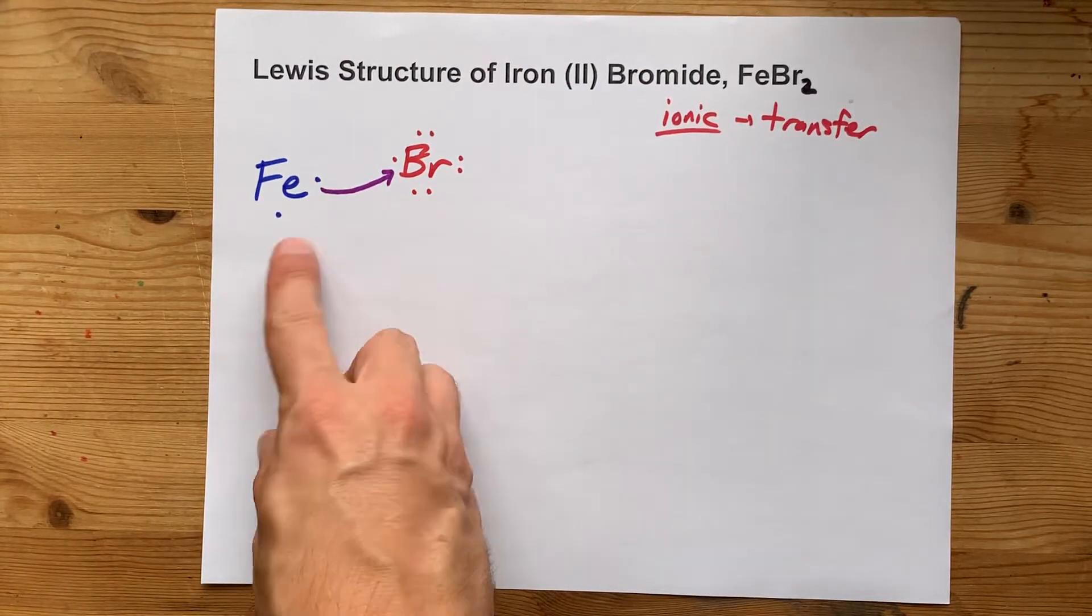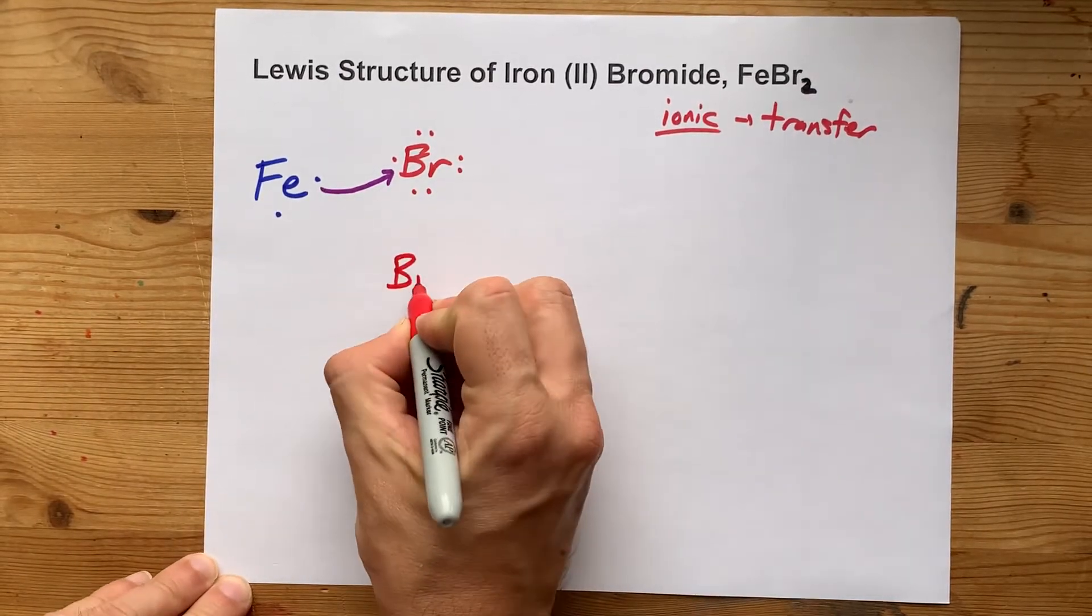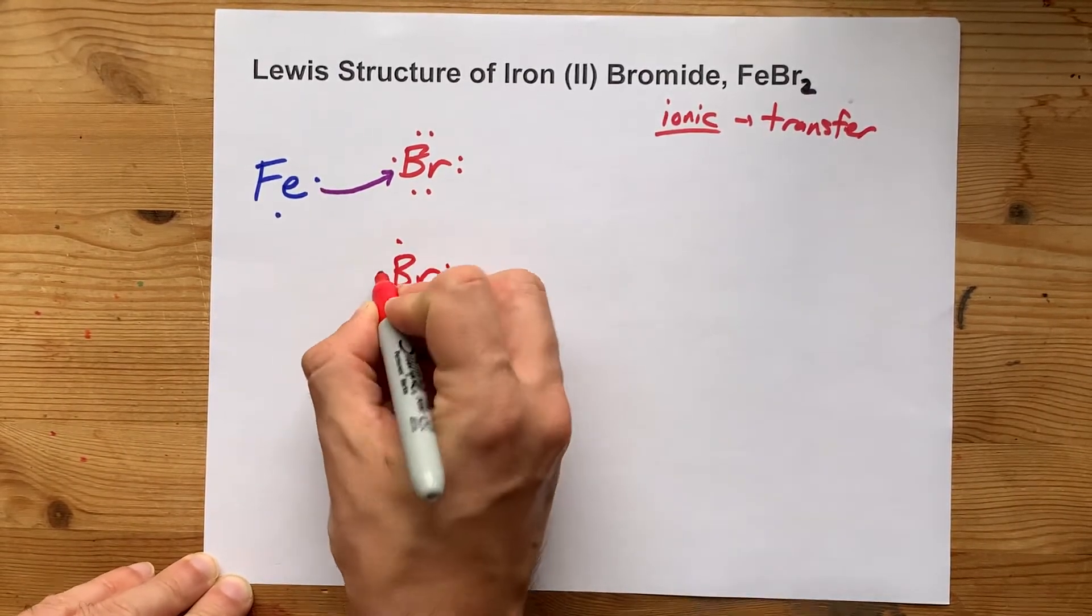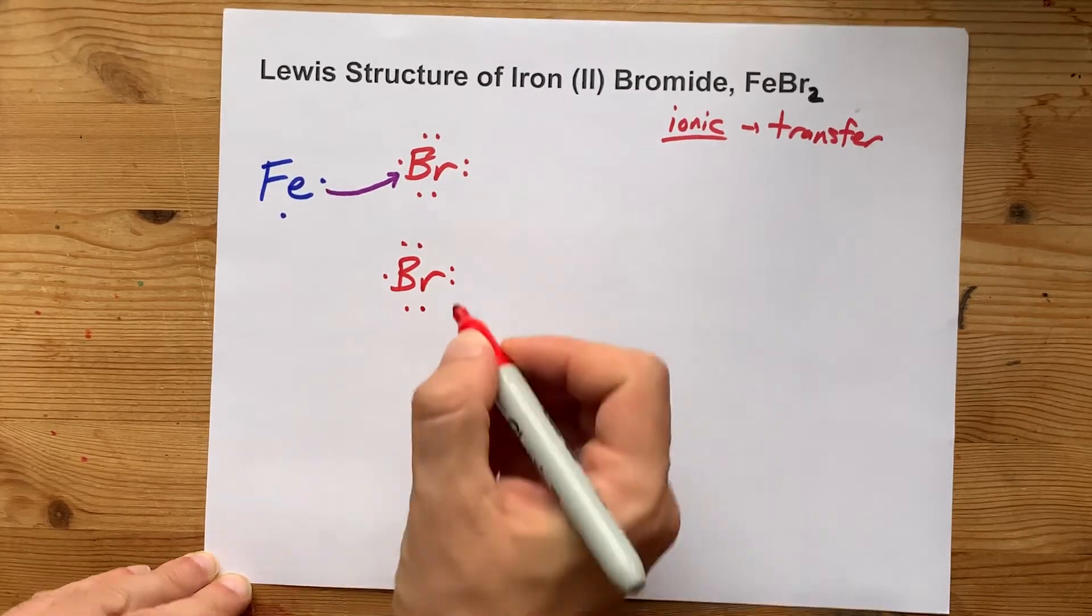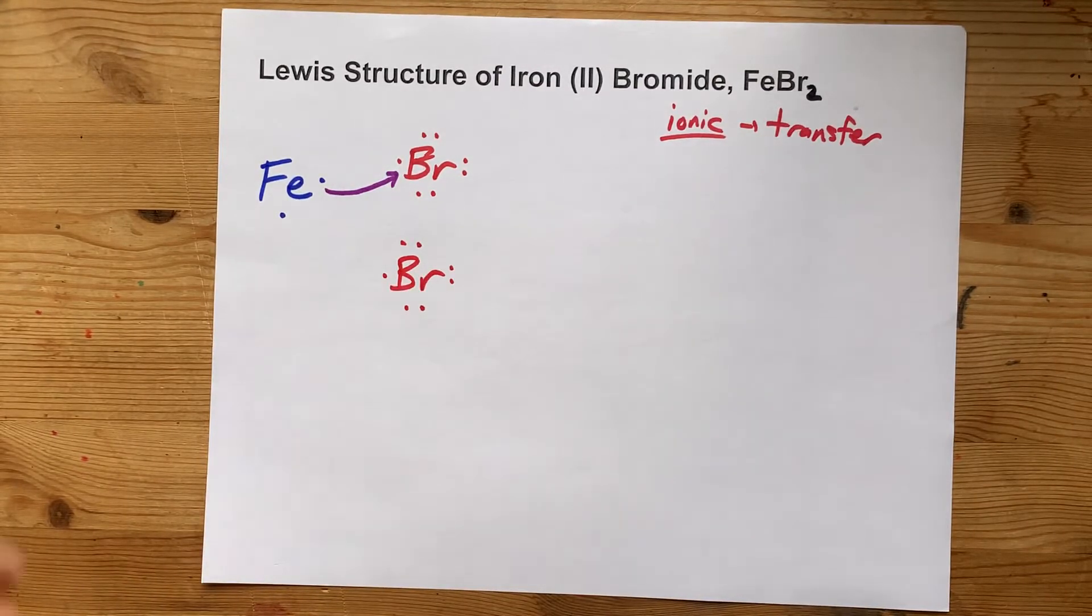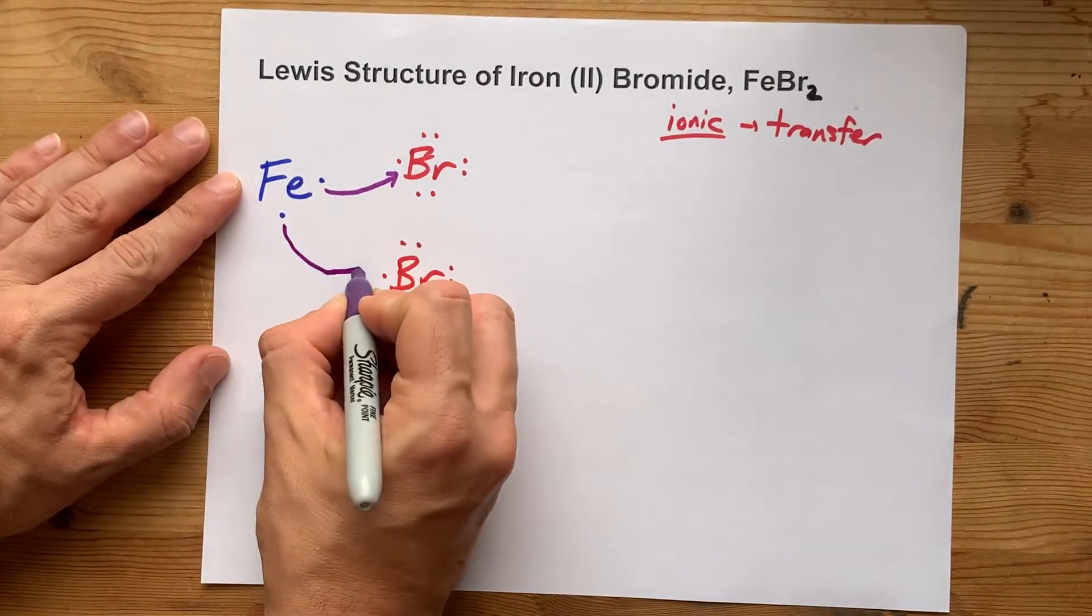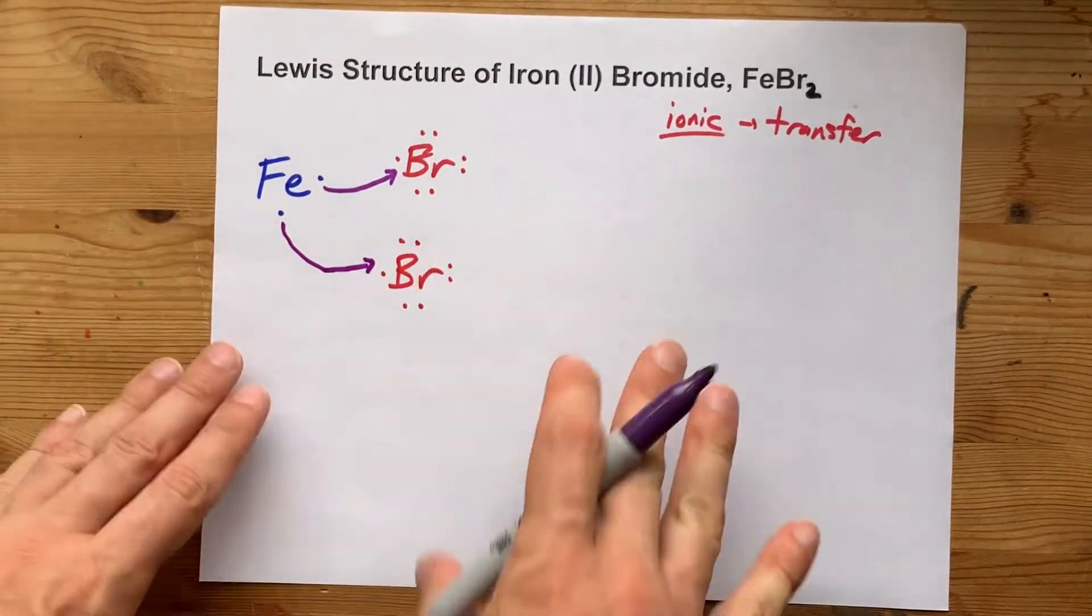Now, that's all fine and good, but where's the other electron going to go? A second bromine steps up to the plate with its seven valence electrons, and now iron has a place to donate its second electron.